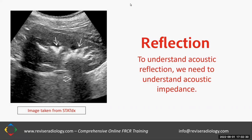To understand acoustic reflection in ultrasound imaging: the transducer produces ultrasound pulses which are sent into the patient's body. These pulses interact with objects within the patient's body and are reflected back in the form of echoes. These echoes travel back towards the transducer, which detects them and converts them to electrical signals, then uses this information to create an image of what's happening inside the patient's body.